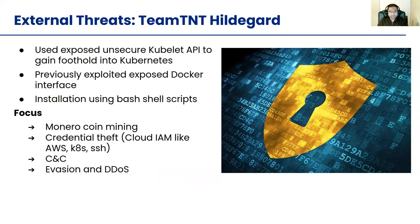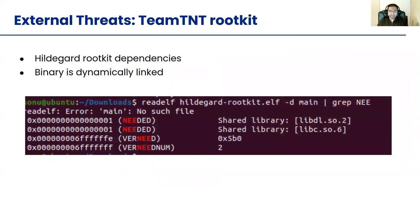Team TNT has typical C2, evasion, and DDoS capabilities. The first thing we found was their rootkit, which was compiled dynamically so that it wouldn't target a specific Linux architecture — rather, the binary should be able to run on as many Linux architectures or flavors as possible. They kept dependencies to a minimum, as you can see in the picture: only libc and libdl.